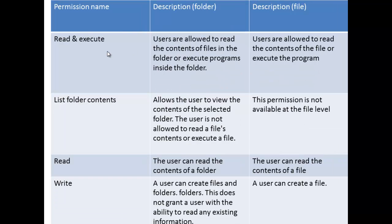Next we have read and execute. For a folder, if you give a person read and execute permission, that person is allowed to read the contents of files within the folder or execute programs inside it. So if there's an .exe file or program in the folder, the user is able to run it. For a file, the user can read the contents and also run the program.